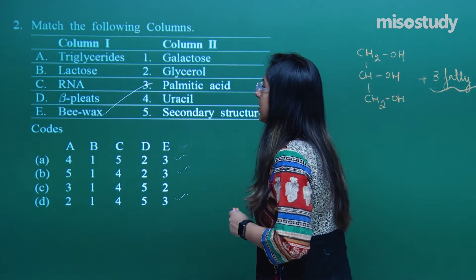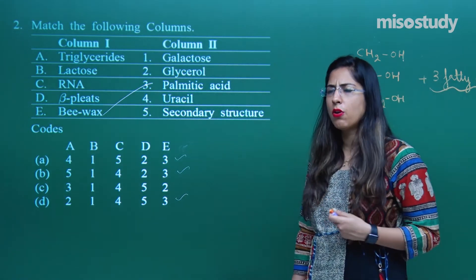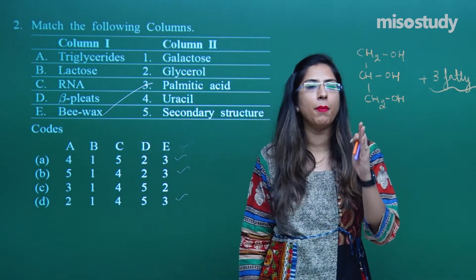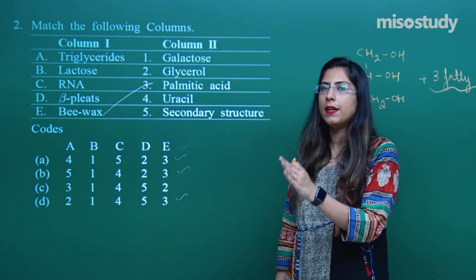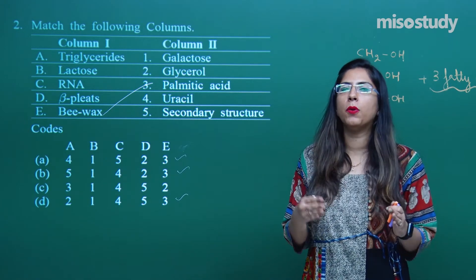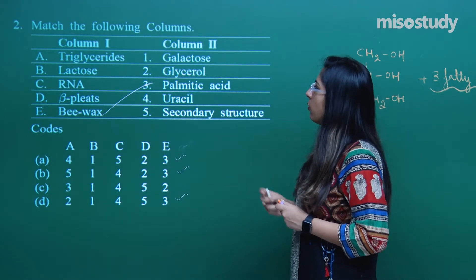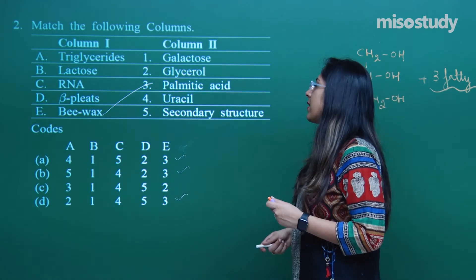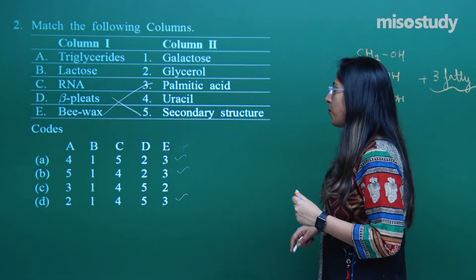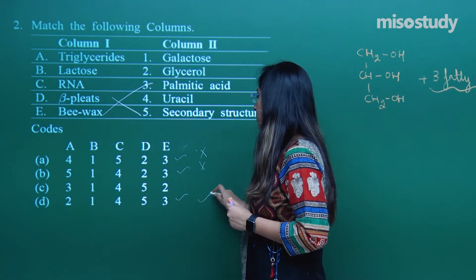Beta-pleated structure — we are talking about the structure of a protein. We have discussed different types of structures: primary, secondary, tertiary, and quaternary. In the primary structure, amino acids are joined together. In the secondary structure, we have two important foldings: beta-pleated sheet and alpha helix. Option number 5 states secondary structure, so for beta-pleated, the correct match is secondary structure. That means for D we need the option containing 5.